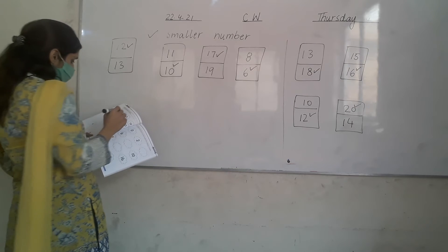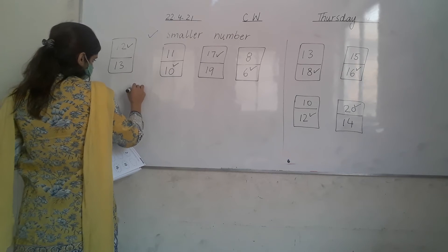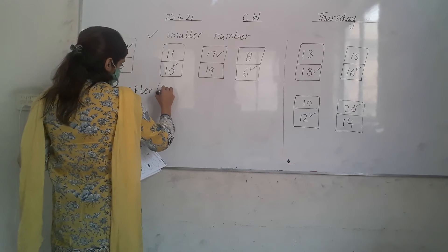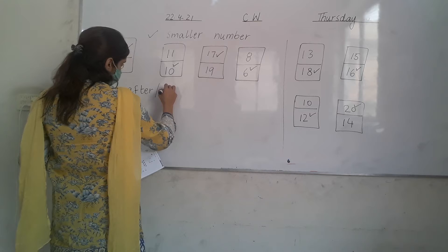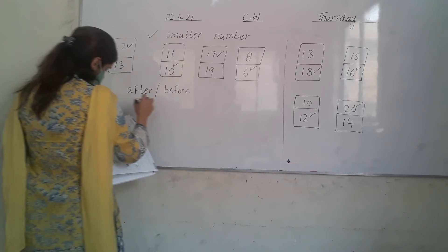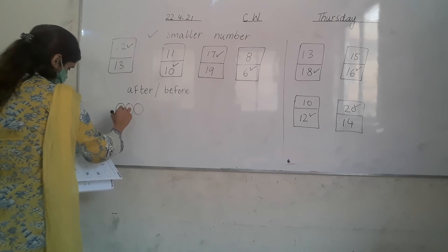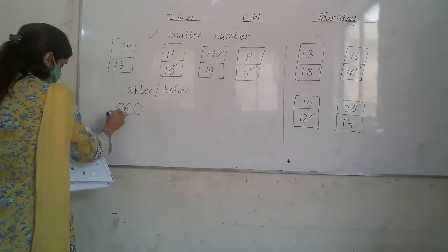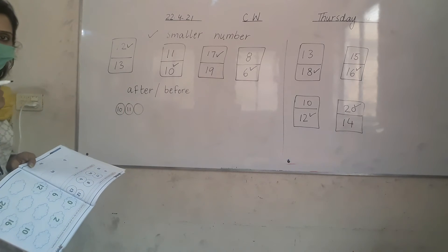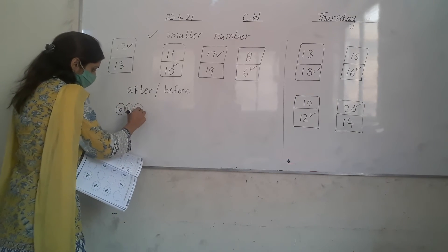What comes after 4? After means the number that follows. Here are the circles. 11 — what comes before 11? 10. What comes before 11? 10. 10, 11, 12.